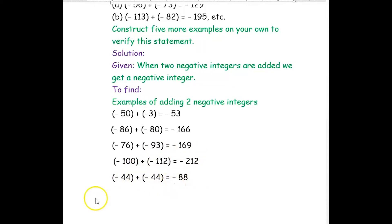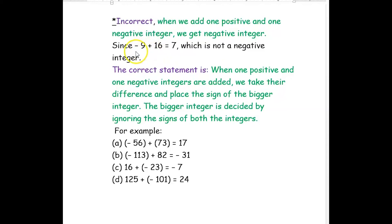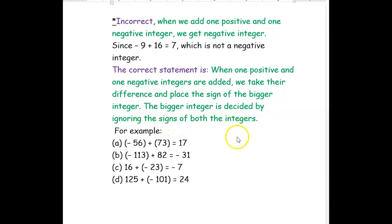Our next question: when we add one positive and one negative integer, we get a negative integer — this statement is also incorrect. For example, positive 16 added with negative 9 gives 7, which is not a negative integer. The correct statement is: when one positive and one negative integer are added, we take their difference and place the sign of the bigger integer, where 'bigger' is decided by ignoring the signs.